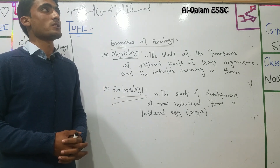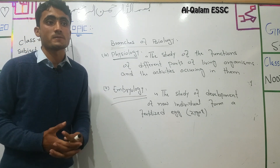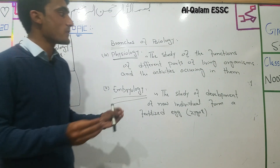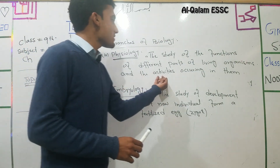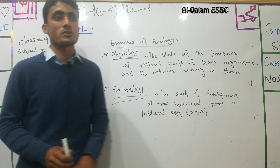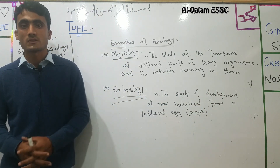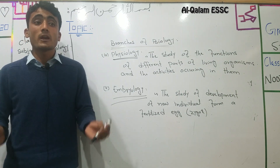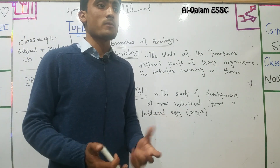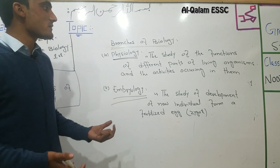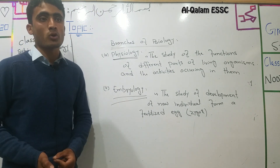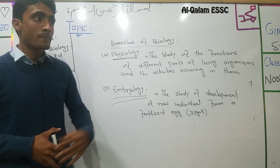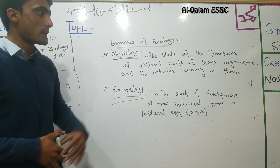Living organisms have different parts, and each part has a specific function. The activities occurring in organisms — for example, in plants there is photosynthesis, and in any organism there is respiration, digestion, and other activities. For plants, the leaf has a function, and the flower has a function.